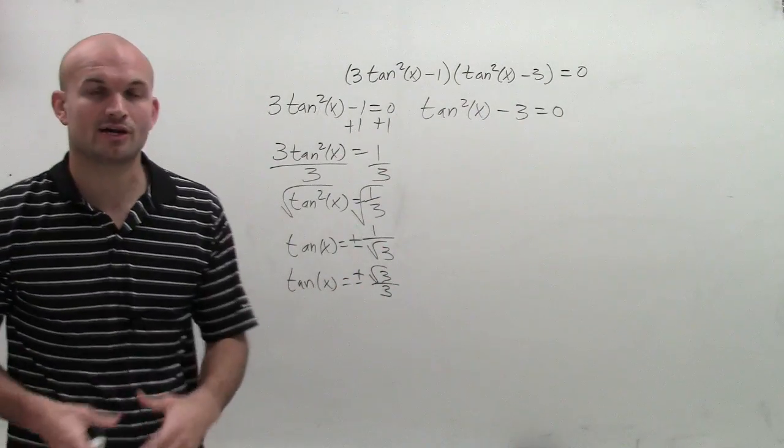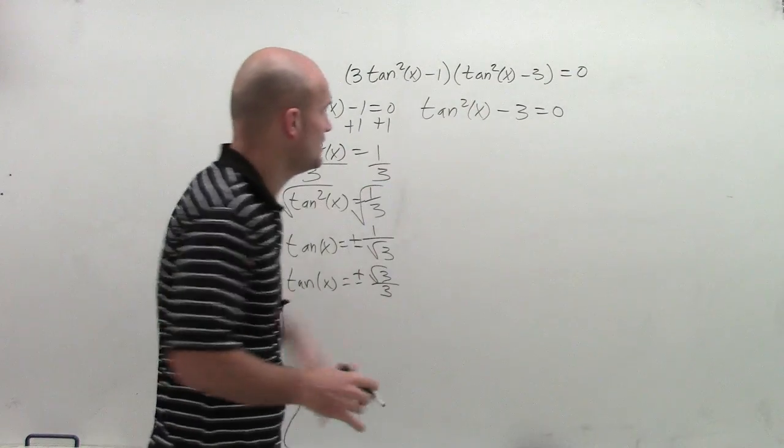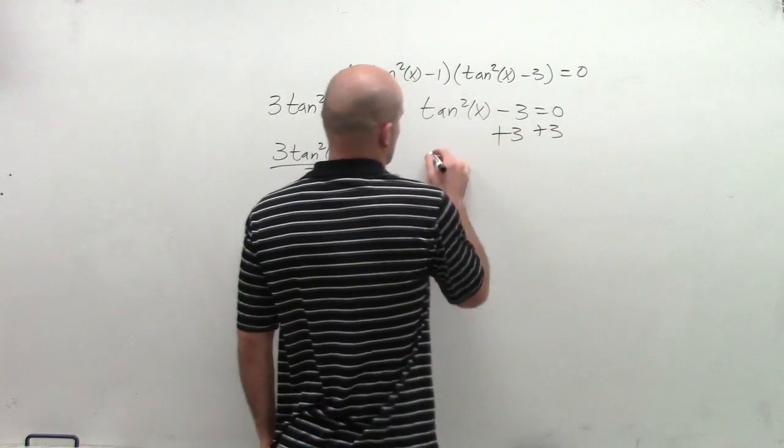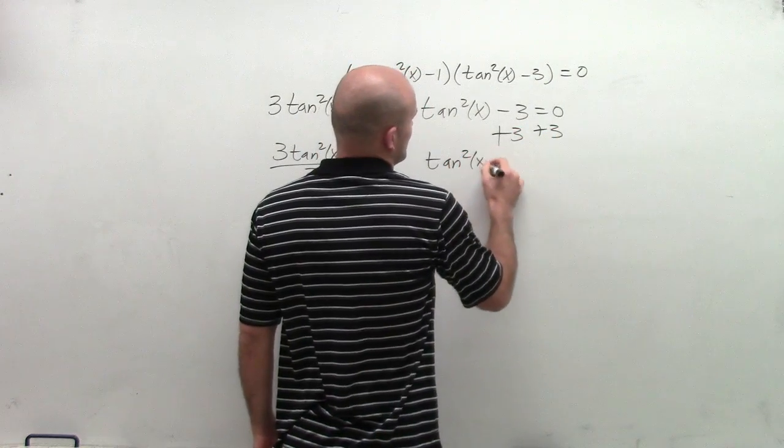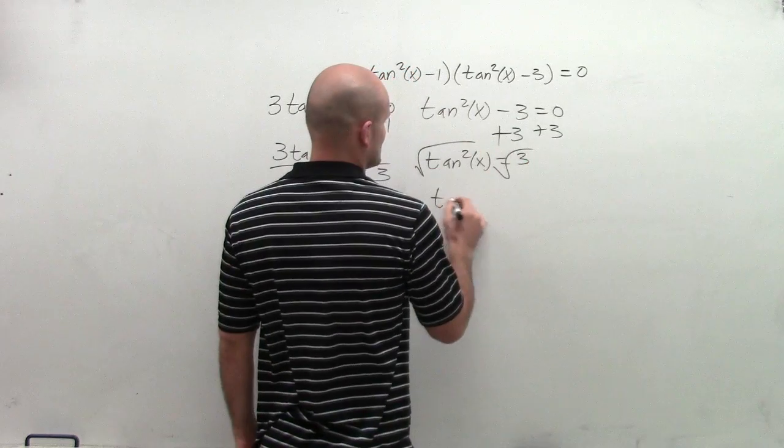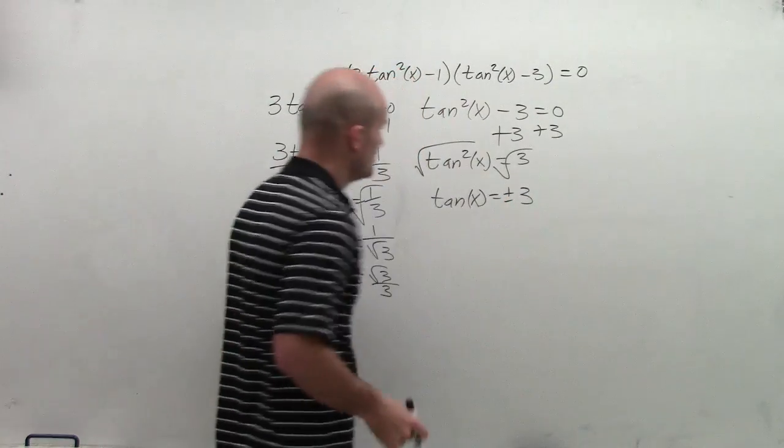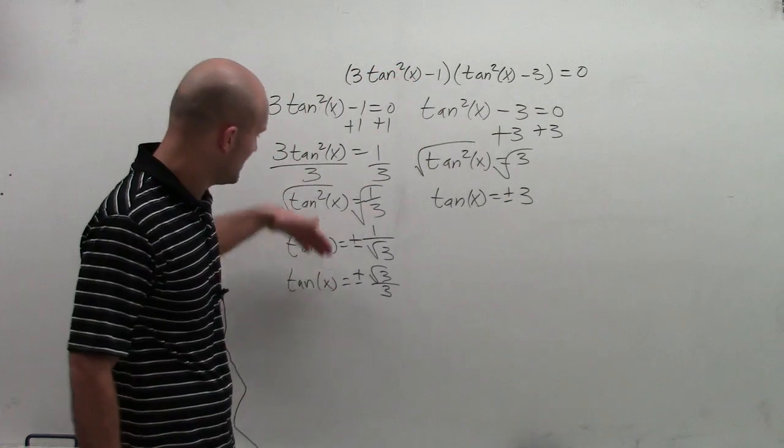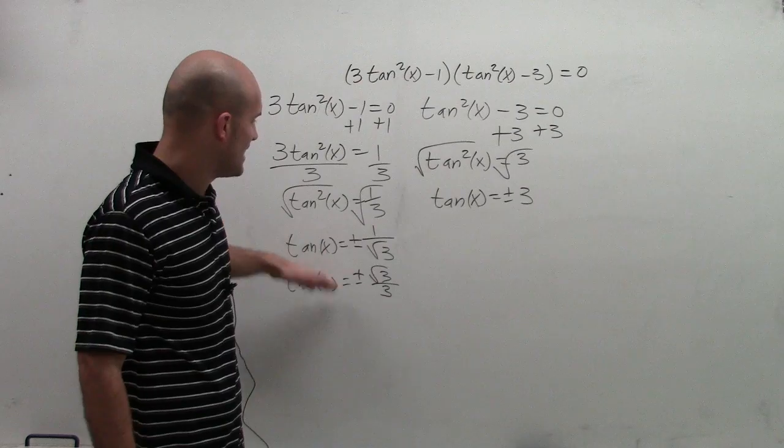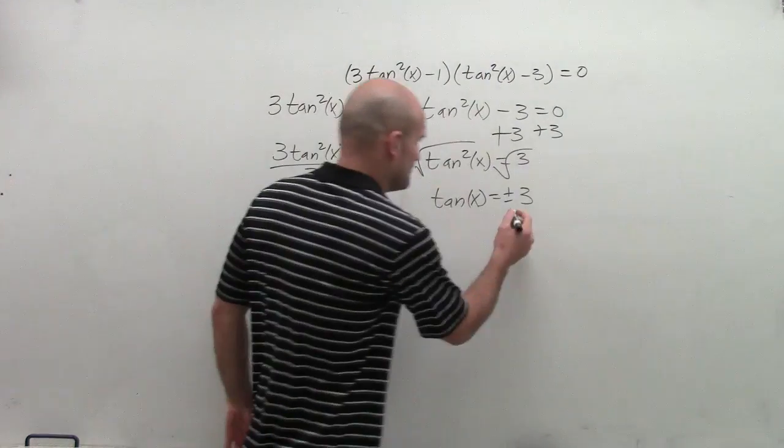And I'm going to use that value to help us when we look at the unit circle. For this problem, I'm going to add 3 to both sides. So I get tangent squared of x equals positive 3. Take the root of both sides. And I get tangent of x equals plus or minus square root of 3. So what we need to do is we need to find the values of x when we have plus or minus square root of 3 over 3 and plus or minus square root of 3.